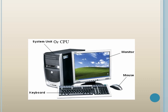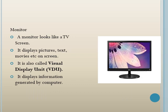This is the photo of a computer with its main parts — monitor, mouse, keyboard, and CPU. The first part we will learn about is the monitor. As you can see, the monitor looks like a TV screen.